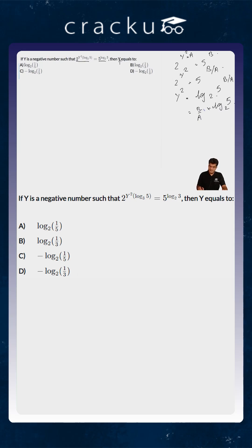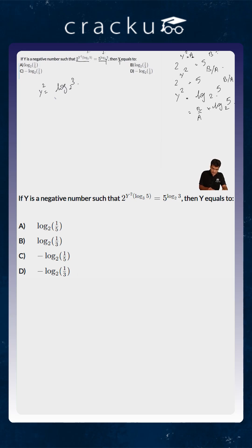What is the value of b? b is the power of 5 which is equal to log 3 to the base 2. And what is the value of a? a will equal log 5 to the base 3. So essentially y squared is equal to log 3 to the base 2 divided by a, which is log 5 to the base 3, into log 5 to the base 2.